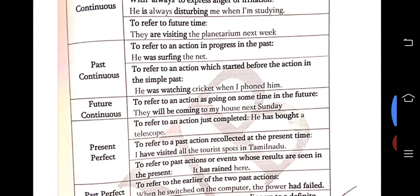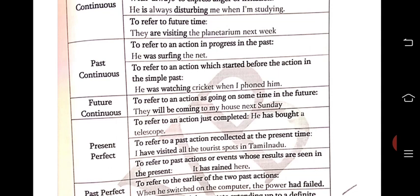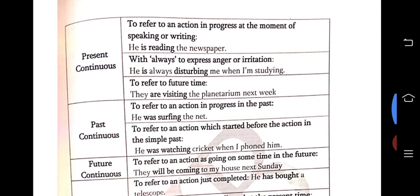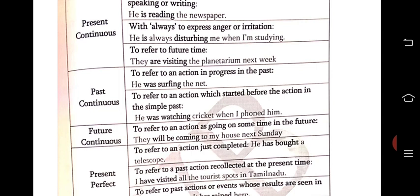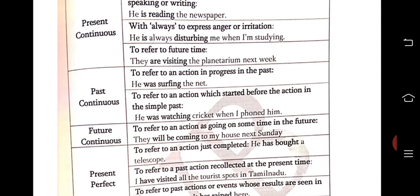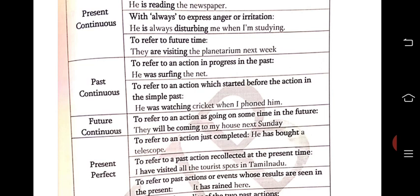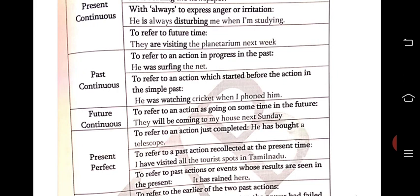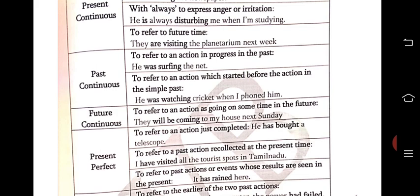Past continuous: to refer to an action in progress in the past. Example: 'he was surfing the net when I was talking to you.' There we should have keywords 'when' or 'while.' Another example: 'he was watching cricket when I fooled him' — to refer to an action which started before the action in the simple past, keyword is 'when.' Future continuous: to refer to an action as going on sometime in the future — 'they will be coming to my house next Sunday' — using 'will be coming.'